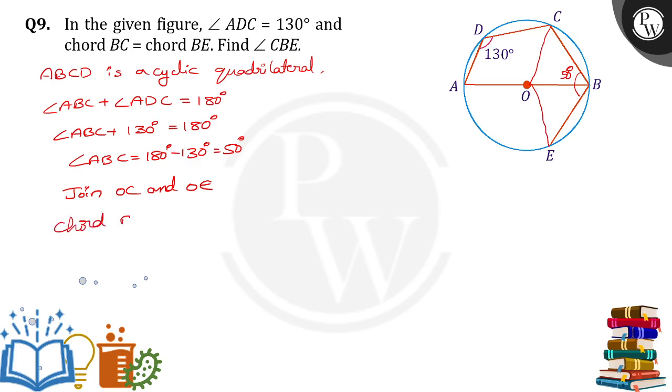It was given that chord BC equals chord BE. When two chords are equal, they will make equal angles at the center. That means angle BOC equals angle BOE.